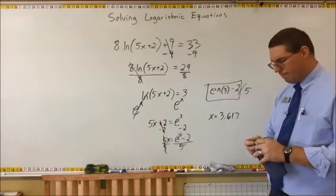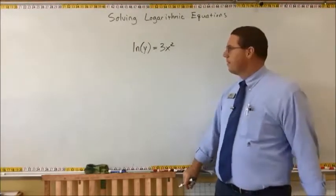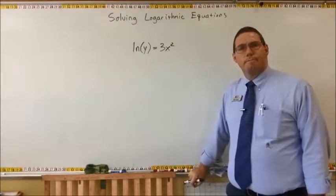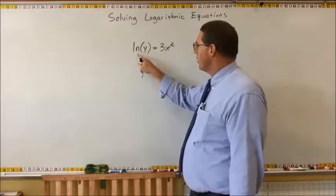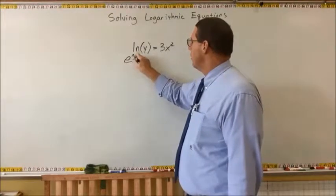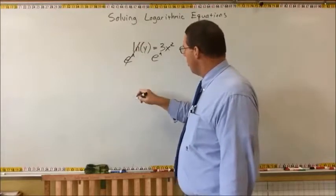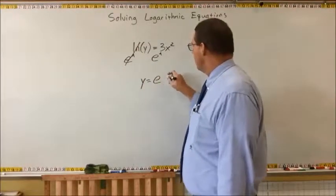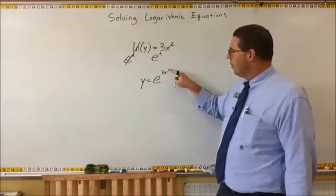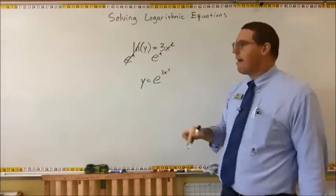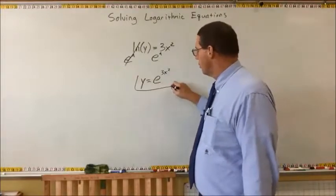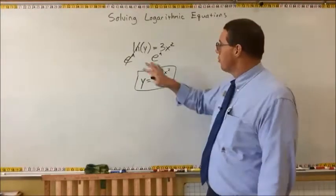Let's do another one — this one's easy. Again, we will not need a scientific calculator because we have two variables, so we're going to solve for y and leave it as a function. The y is tied up by this natural log — cancel it with an e to the power of on both sides. That cancels the natural log, and we get y is equal to e to the power of 3x squared. It is acceptable to have an exponent inside of an exponent. So this is your final answer.